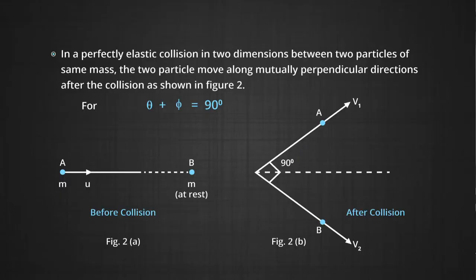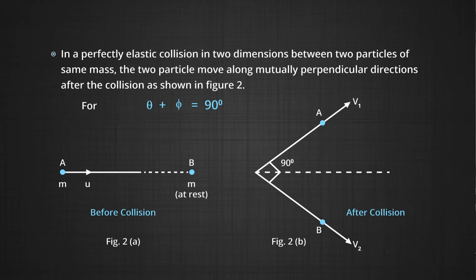Third point: in a perfectly elastic collision in two dimensions between two particles of the same mass, the two particles move along mutually perpendicular directions after the collision, as shown in Figure 2. In Figure 1, bodies A and B move along two different directions after A strikes B, where theta is the angle of scattering and phi is the angle of recoil. In Figure 2, if they make a 90-degree angle with the original line of motion, that means theta plus phi equals 90 degrees.